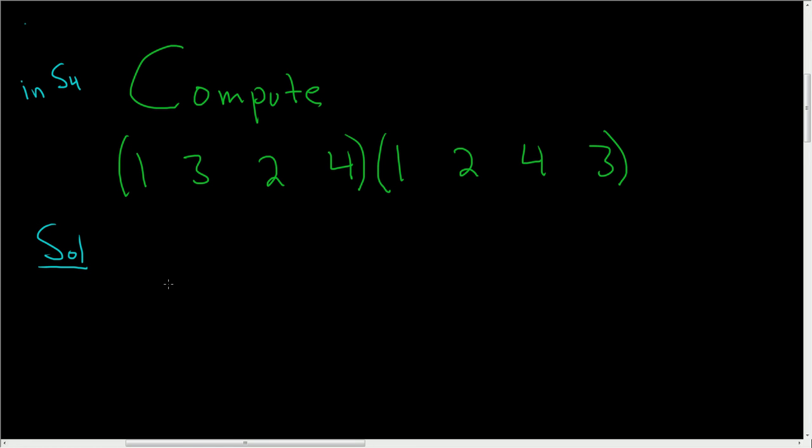The way we'll do the multiplication is right to left, since that seems to be more common than the other way. So we start from the right, and we can pick any of these numbers to start with. Let's go ahead and start with the number 1. So we write a parenthesis down, and then we write the number 1.